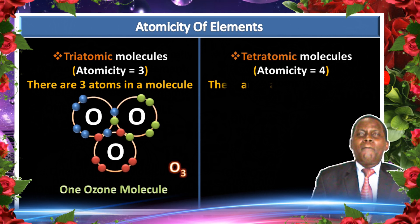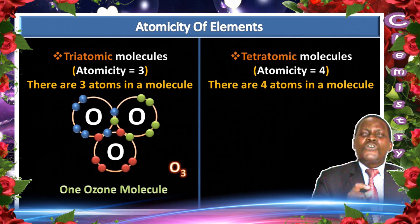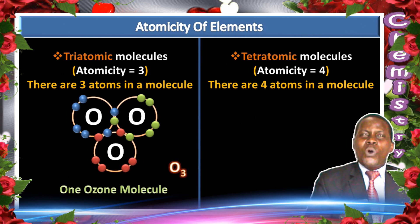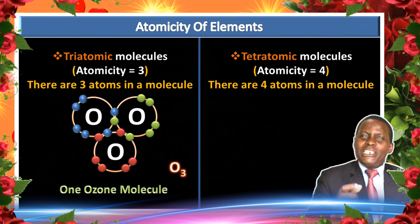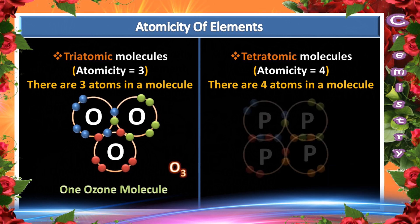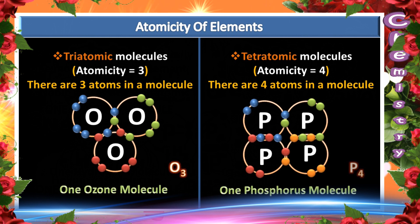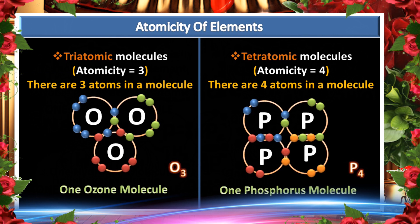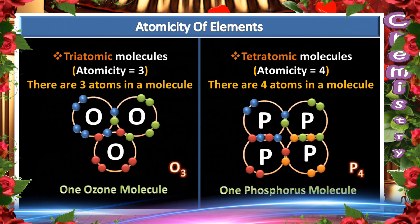A molecule containing four atoms is referred to as tetraatomic. An example of a tetraatomic molecule is phosphorus — one molecule of phosphorus contains four atoms of phosphorus. Therefore that molecule is tetraatomic.